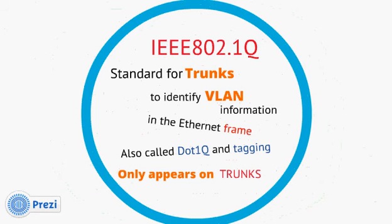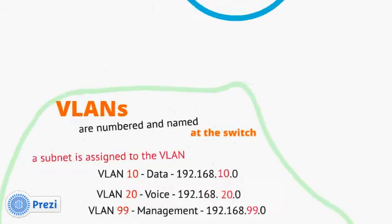The first standard we'll look at is 802.1q, which is a standard for trunks used to identify VLAN information in the Ethernet frame — specific to within switches and on trunks. We also call it .1q, short for the IEEE 802.1q standard. It's also called tagging, because it inserts a special field into the Ethernet frame and tags that frame with the VLAN ID it belongs to. It only appears on trunks, which are between switches and sometimes routers.